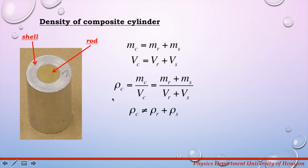Finally, to calculate the density of this composite object, we simply divide the mass of the composite object by the volume of the composite object. It is important to remember that the density of a composite object is never equal to the density of the inside part plus the density of the outside part.